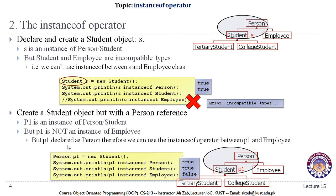Because p1 is declared as a Person, we can use the instanceof operator between p1 and Employee. Since Person is a superclass of both Employee and Student, there is no compiler error — the comparison simply returns false.